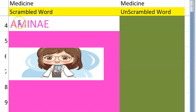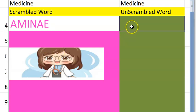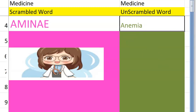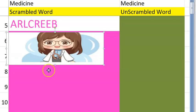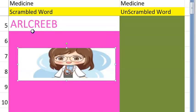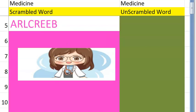The fourth one is a pathological condition, or it can be physiological. It starts with an A — there is less hemoglobin in the body — it is anemia. Very good!